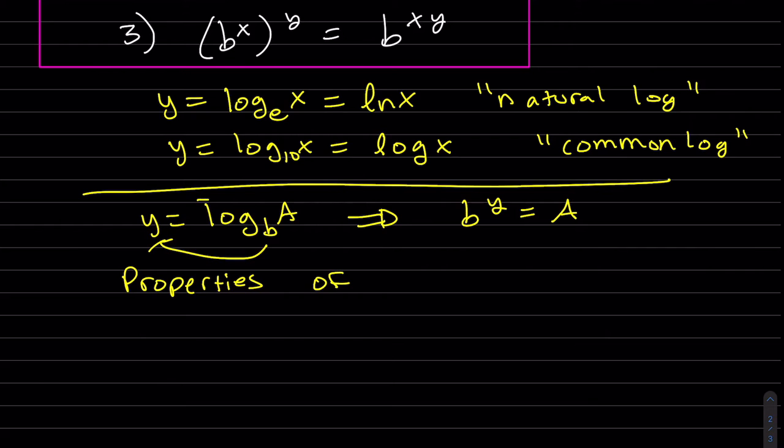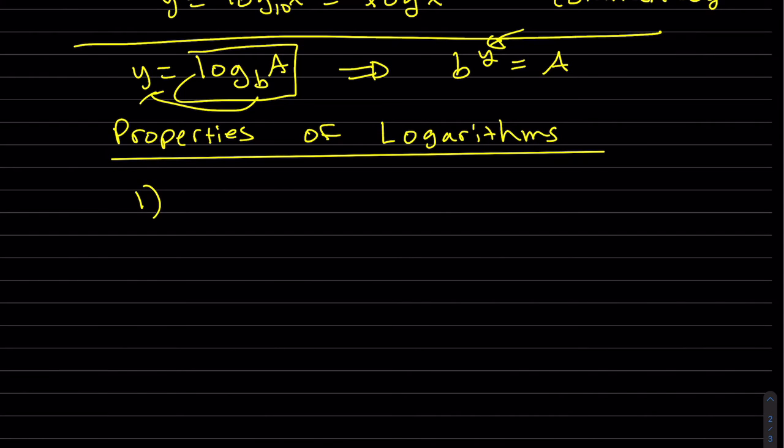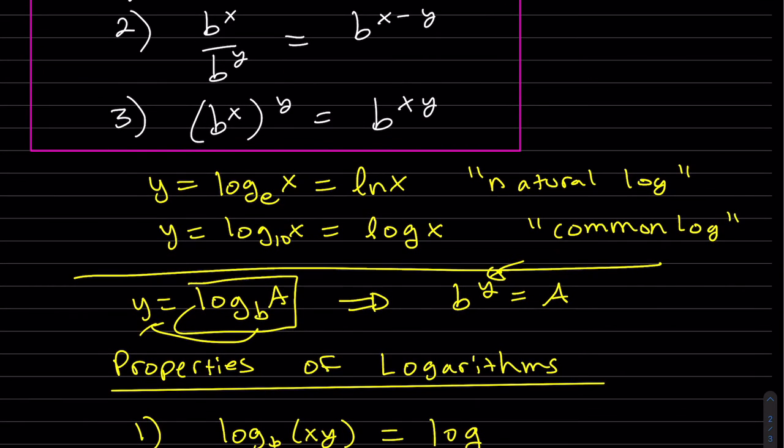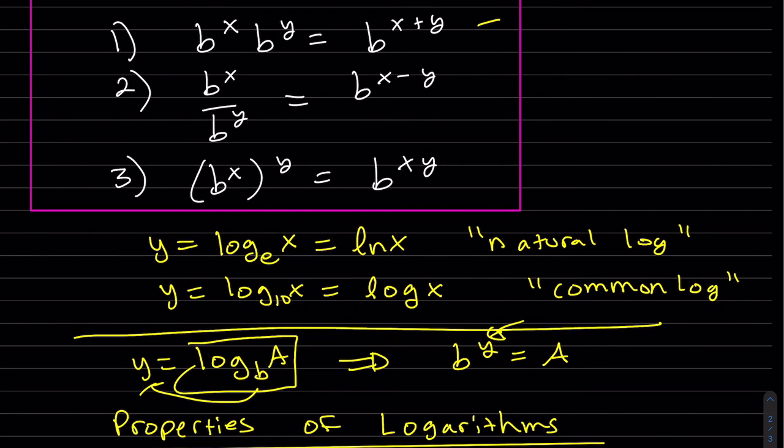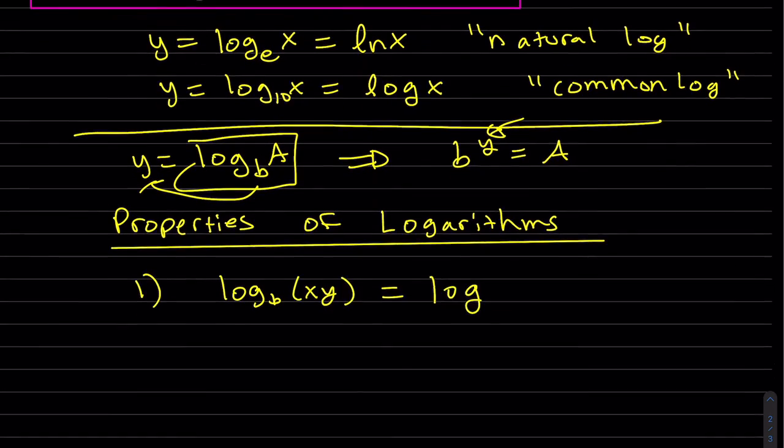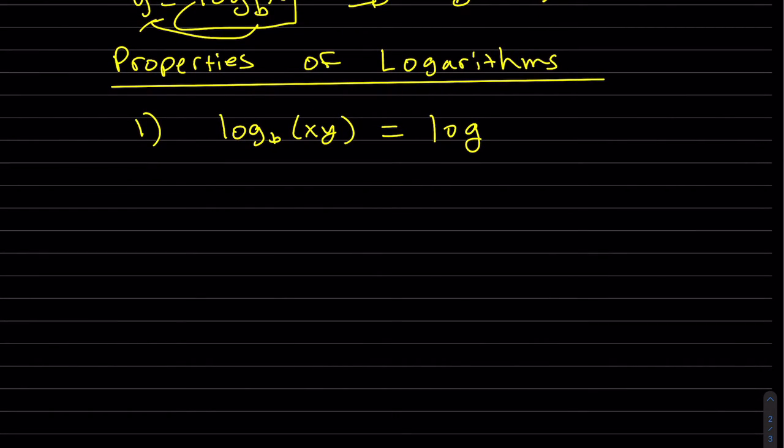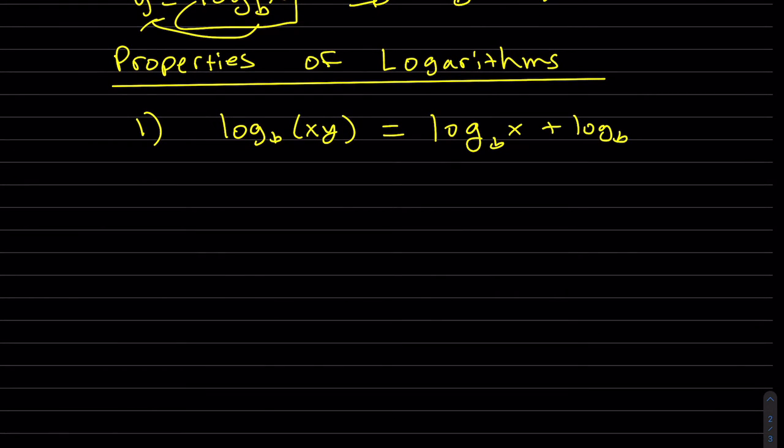So basically, y is the power. It's an exponent. We have three properties here. And this is multiply, where you add. Kind of the same as this property. Where you multiply, you add the exponents. These are exponents. You add the exponents. You add the logs.